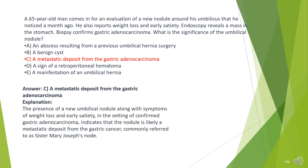The answer is C. A metastatic deposit from the gastric adenocarcinoma. The presence of a new umbilical nodule along with symptoms of weight loss and early satiety, in the setting of confirmed gastric adenocarcinoma, indicates that the nodule is likely a metastatic deposit from the gastric cancer, commonly referred to as Sister Mary Joseph's node.